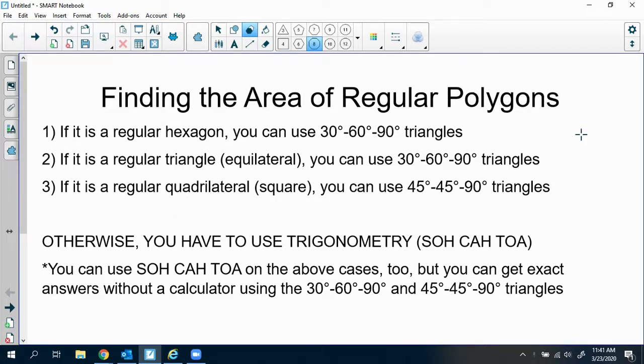Or if it's a regular quadrilateral or a square, you can use 45-45-90 triangles, which is something that you can use if you're given the radius of the square, but otherwise you can probably just figure out how to find the area of the square using other methods.